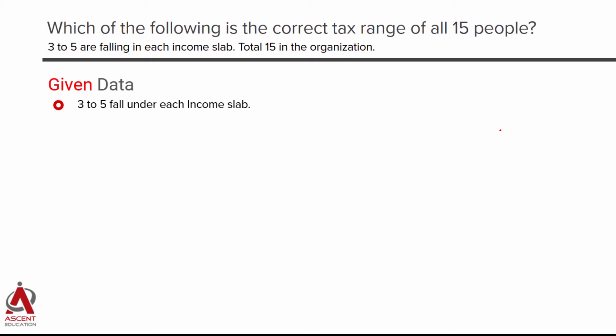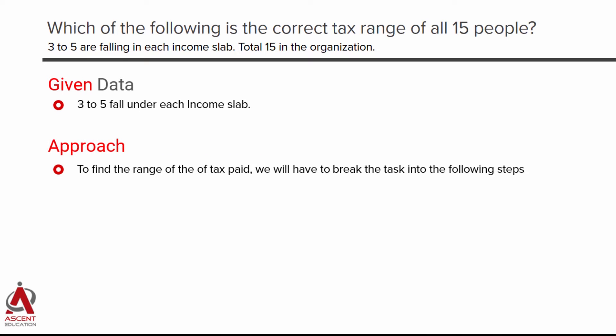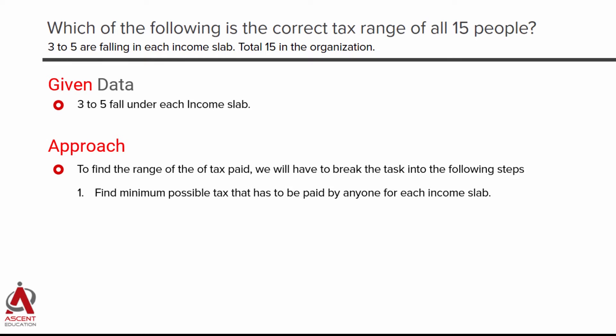The first data point is that 3 to 5 people fall under each income slab — we'll use this in the second layer. The approach has four steps. Step one: compute the minimum possible tax for each income slab. For example, someone in the 2000–5000 slab pays the lowest tax if their income is 2001, and the highest tax if their income is 5000. That's how we find the minimum and maximum tax for a given slab.